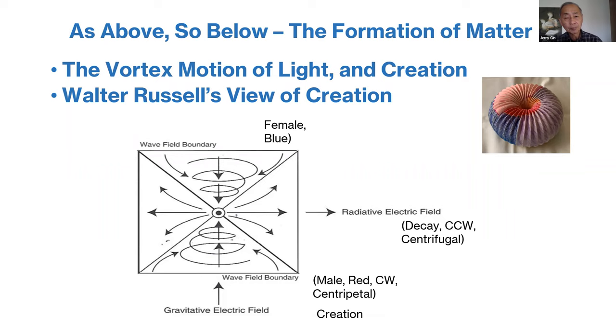Creation is a cycle of creation and decay. The compression into the center is the formation of matter, and the unwinding of the centripetal motion of light is a breakdown of matter. You can call this radiative electric field and talk about it in terms of gravitative electric field.